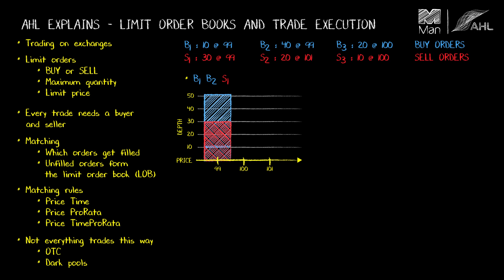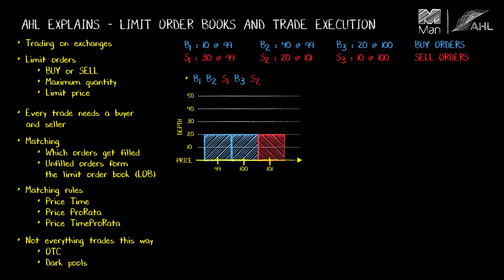The depth at 99 will therefore reduce to 20. Now B3 arrives and it's added to the book. S2 arrives and it's also added to the book. Now S3 arrives — we have a match again. B3 will get part filled, and the final limit order book will look like this.